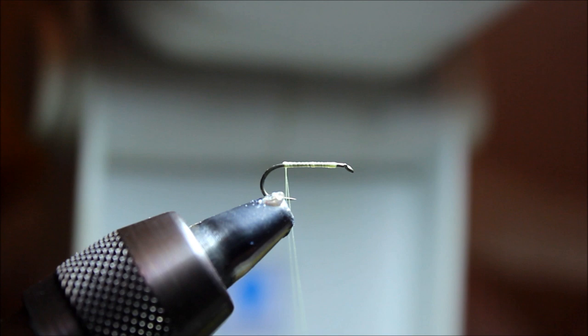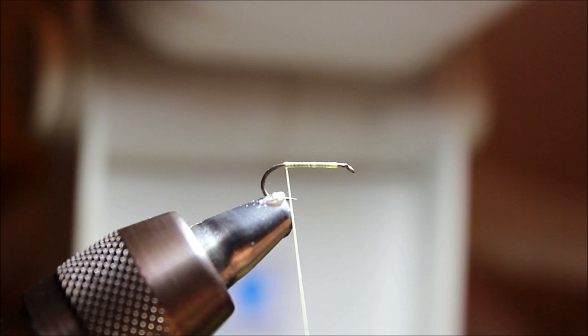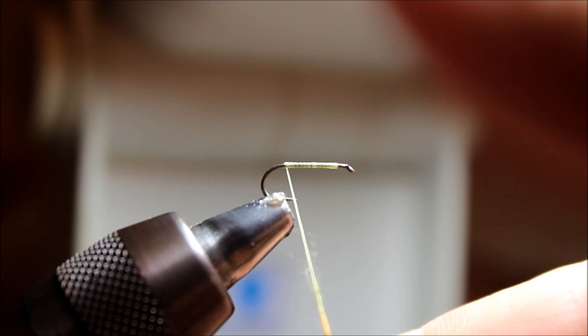Now we're going to take some Rayman Rumpf Sulfur Colored Dubbing for the abdomen. You could use a biot for the abdomen if you wanted to, but I've found over the last year that for me personally, the dubbing body has worked really, really well.